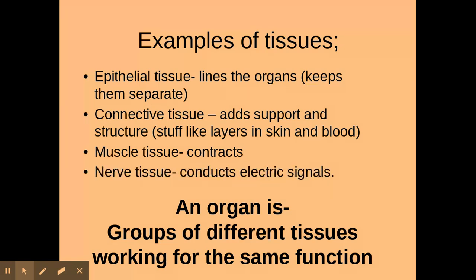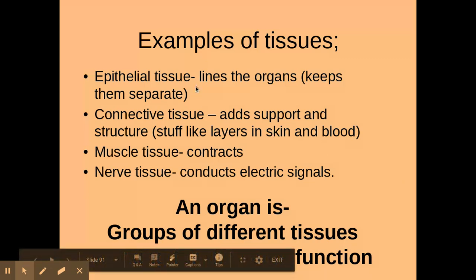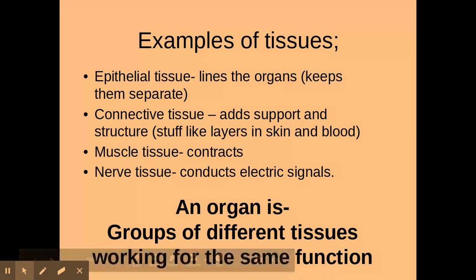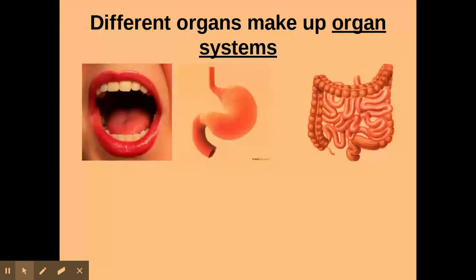For example, in the stomach you would have all of these types of tissues, and they work together in the stomach to help break down your food. Different organs make up organ systems. Now it's really important you don't just say the word 'system' here because you will not get the marks — you have to say 'organ system'.